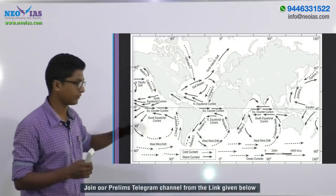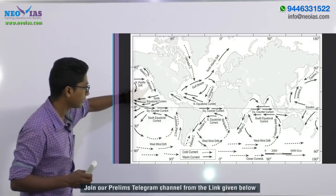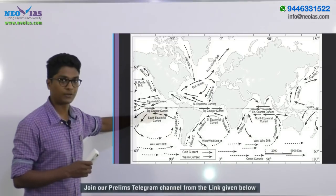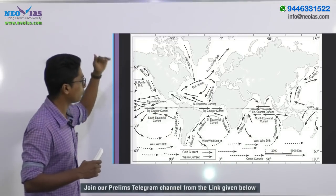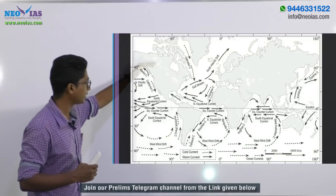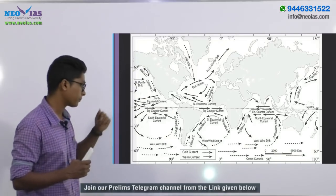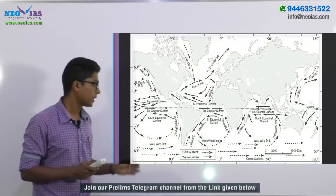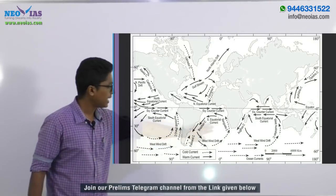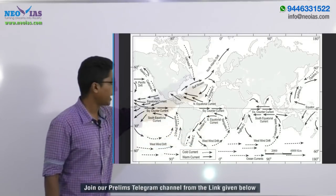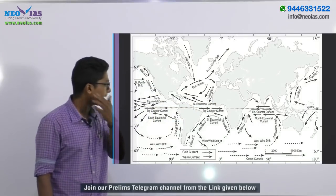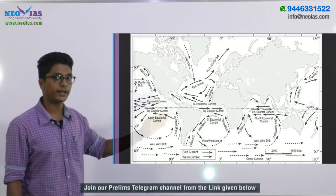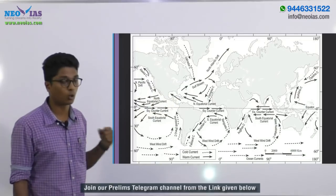In the case of the Mojave Desert in North America, the current along that coast is the Californian current, which is a cold current moving from the polar region towards the equatorial region. For the Atacama Desert, the cold current is the Peruvian or Humboldt current. For the Namib or Kalahari Desert, we have the Benguela current. For the Saharan Desert, we have the Canaries current. And for the Great Australian Desert, the cold oceanic current is the West Australian cold current.